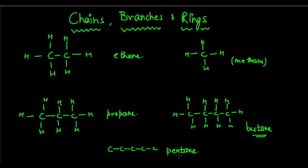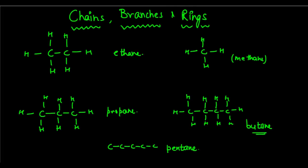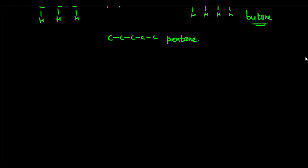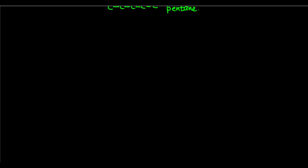This here is five carbon atoms — this is called pentane. The number of hydrogens are understood. In this way you can have very very long chains. So that's one thing. Now let's have a look at a different perspective.